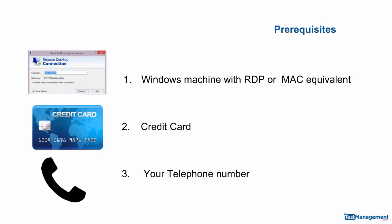A couple of prerequisites. Firstly, you need to have a Windows machine or a Mac machine which has an RDP application, so that we can RDP onto our Windows virtual machine. Secondly, you'll need a valid credit card. When you sign up for an AWS account they will require you to enter your credit card. Everything we do on this course will be based around using the free tier, so you shouldn't be charged, but Amazon still requires your credit card before they set your account up. Thirdly, as part of the account creation, Amazon will want to confirm your account using your telephone number - you need a valid telephone number.